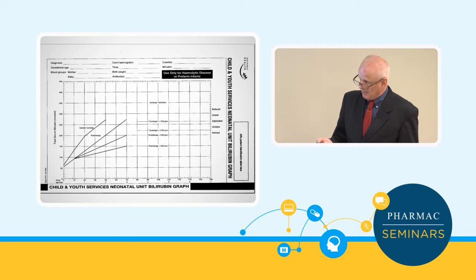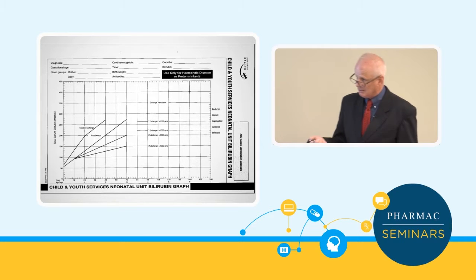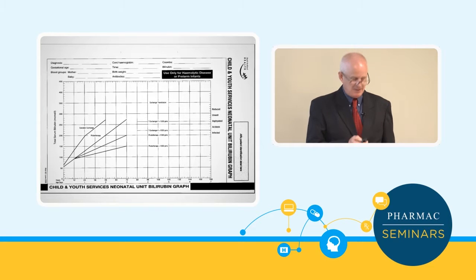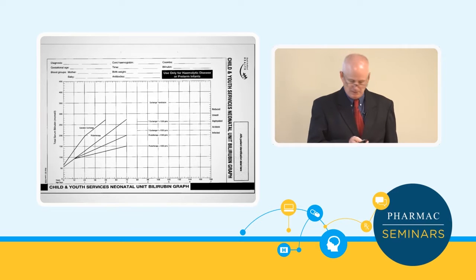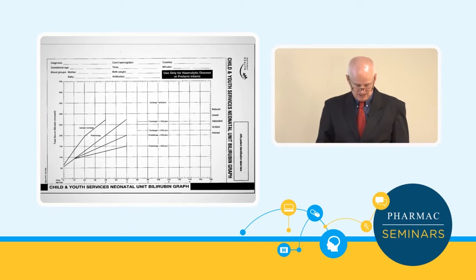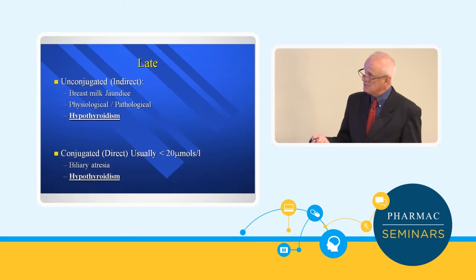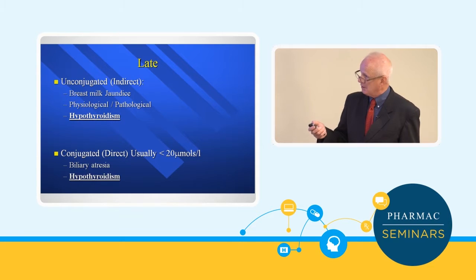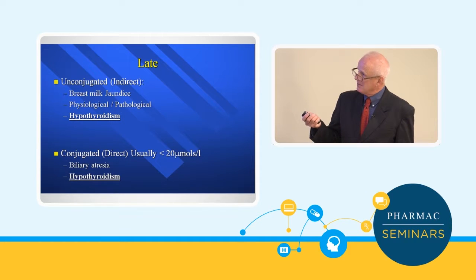A rule of thumb: if you suspect a hemolytic setup and have a cord bilirubin above 50 or 60, that probably needs to be watched. That's not a normal cord bilirubin level, and that baby may be starting to develop a hemolytic setup.